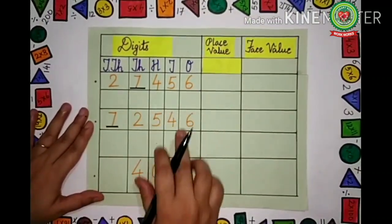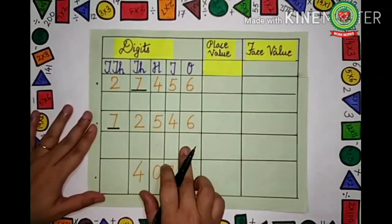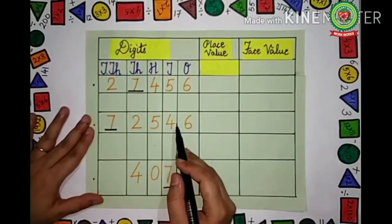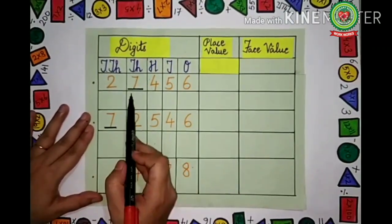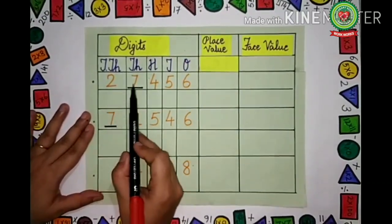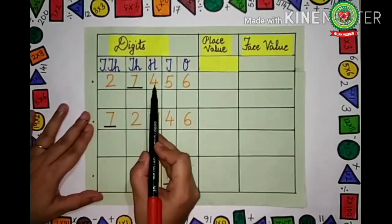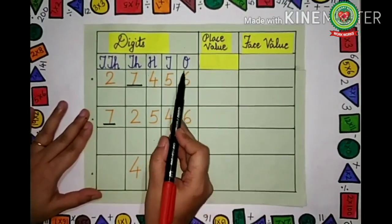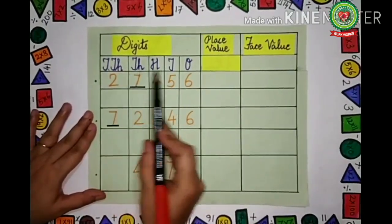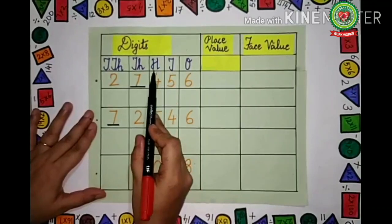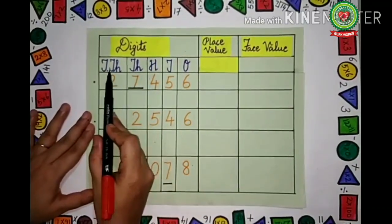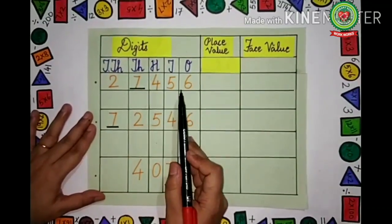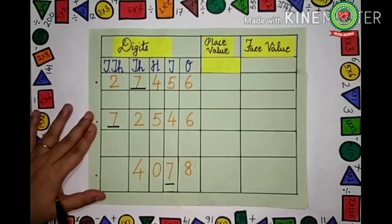There are some numbers given to us. We have to write the place value and the face value of the numbers. Let us see the first number: 2, 7, 4, 5, 6. The place values written over these numbers are 1's, 10's, 100's, 1000's, and 10,000's. Now we have to find the place value of the underlined digit.